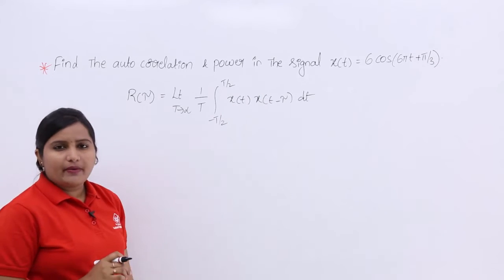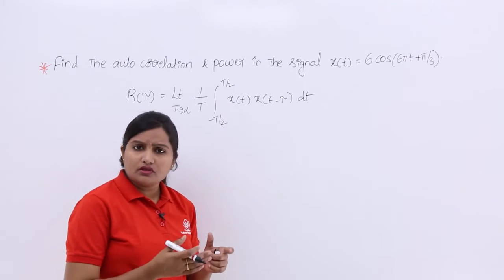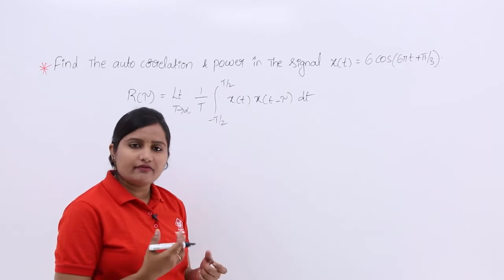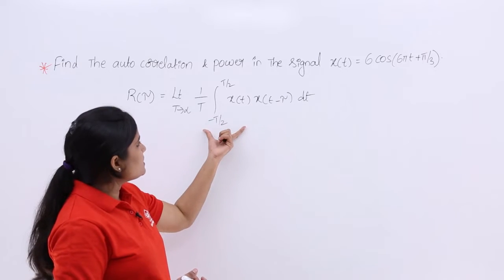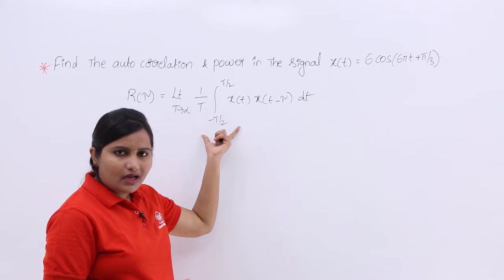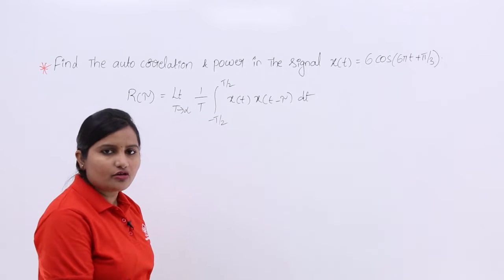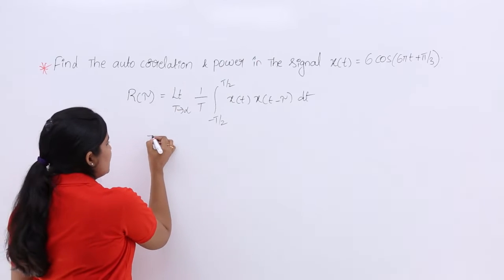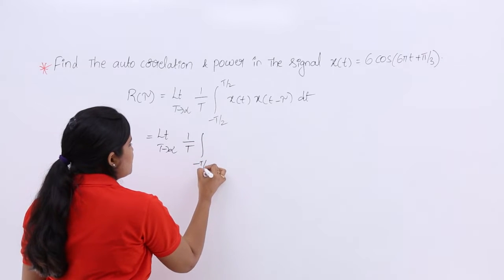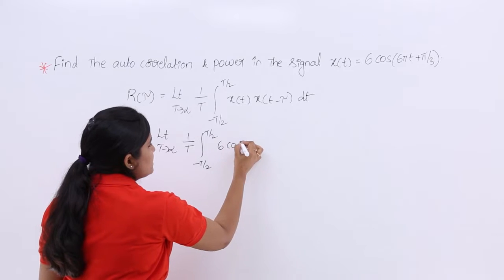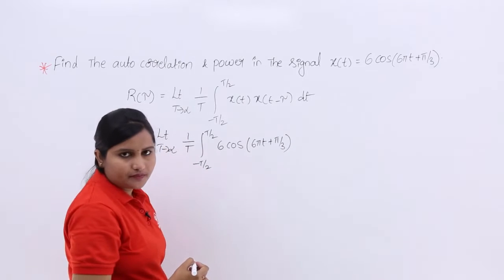All periodic signals are power signals, so if a signal has some period it can be considered a power signal. For the given power signal, we substitute into the autocorrelation formula: limit T→∞ (1/T) ∫ from −T/2 to T/2. In place of x(t) I am substituting 6cos(6πt + π/3).